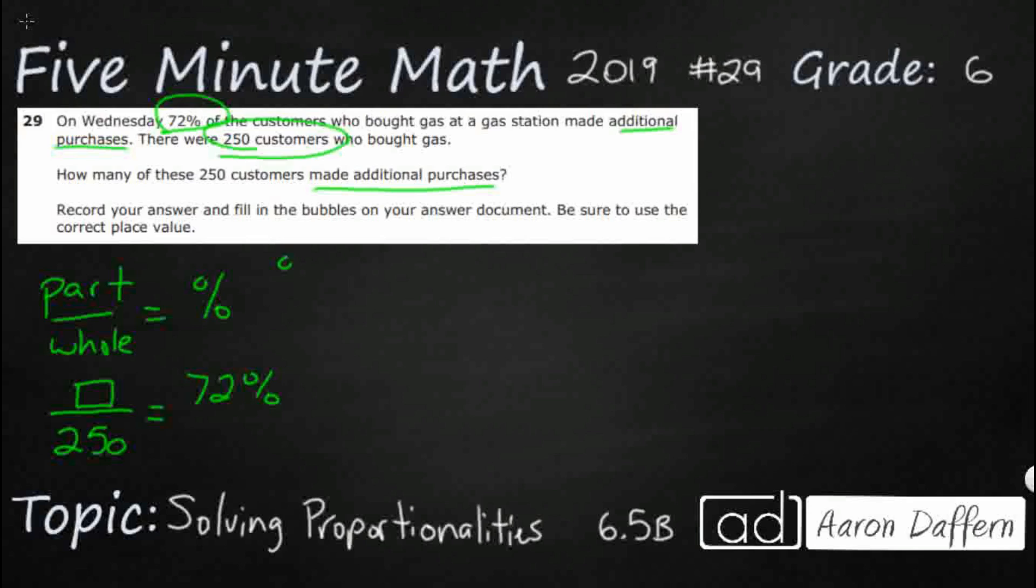So how do we turn a percent into a fraction? Well first we turn it into a decimal. We move the decimal point two times to the left. Now 72% does not have a decimal. So that means you always put it after the ones place. So 72 point. We can move that once and we can move that twice. We can drop the percent sign, put a zero in front. So 0.72 or 72 hundredths.